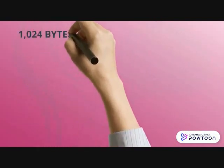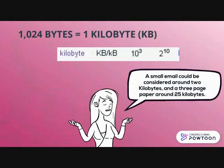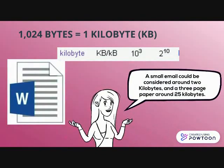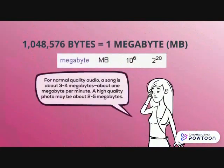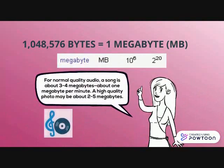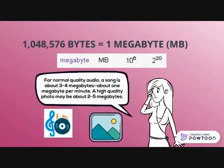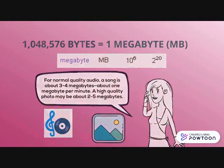A kilobyte is equal to 1,024 bytes. A small email could be considered around 2 kilobytes and a three-page paper around 25 kilobytes. Moreover, 1 megabyte is equal to 1 million bytes. For normal quality audio, a song is about 3 to 4 MB. Meanwhile, a high quality photo may be about 2 to 5 MB.